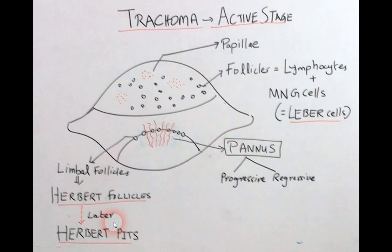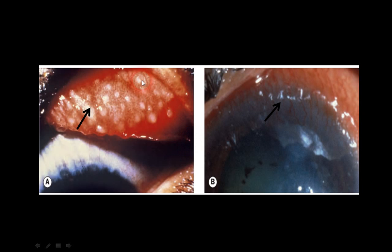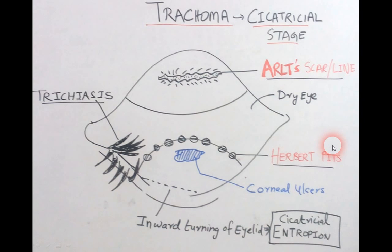Herbert follicles — in the second chronic stage, these will form Herbert pits. Now observe the pictures of active trachoma: you can see follicles as raised white lesions, classic trachoma appearance, and pannus over the cornea. You can see the vasculature and this infiltration of the cornea — the pannus.